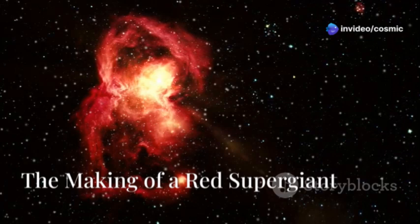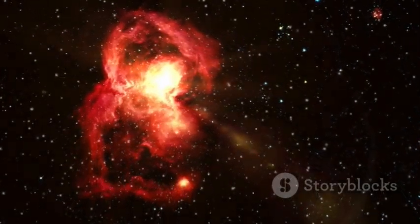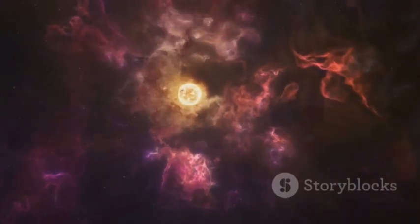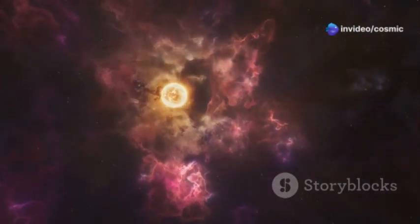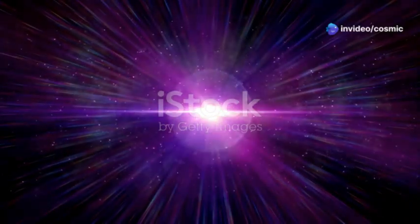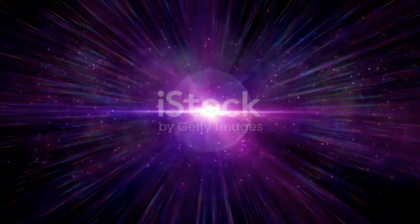The transformation of a star into a red supergiant is a fascinating and complex process, driven by the interplay of gravity and nuclear fusion. Stars like Betelgeuse begin their lives with a core composed primarily of hydrogen, the simplest element. Through nuclear fusion, hydrogen atoms are fused into helium, releasing a tremendous amount of energy in the process.